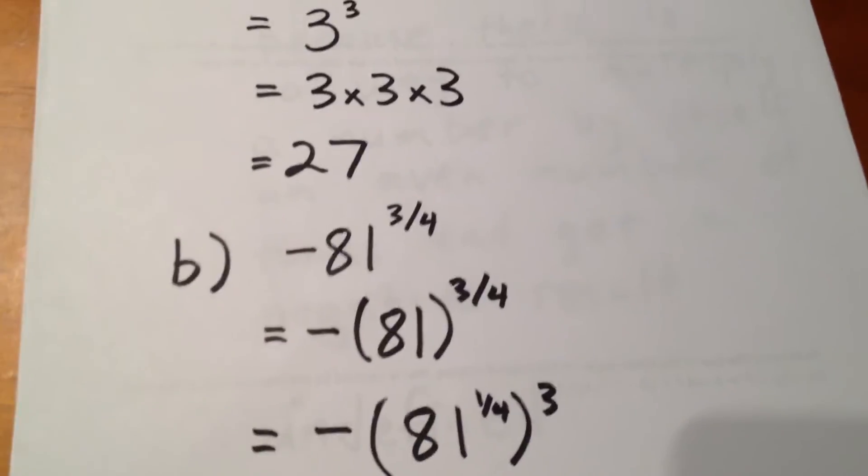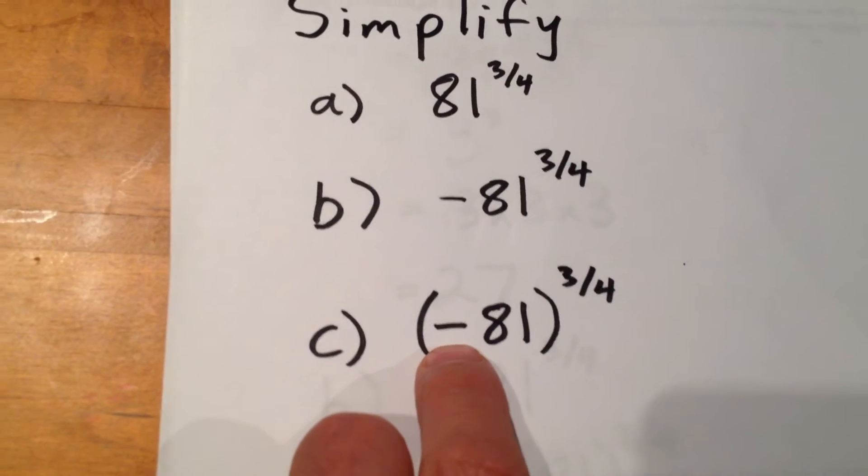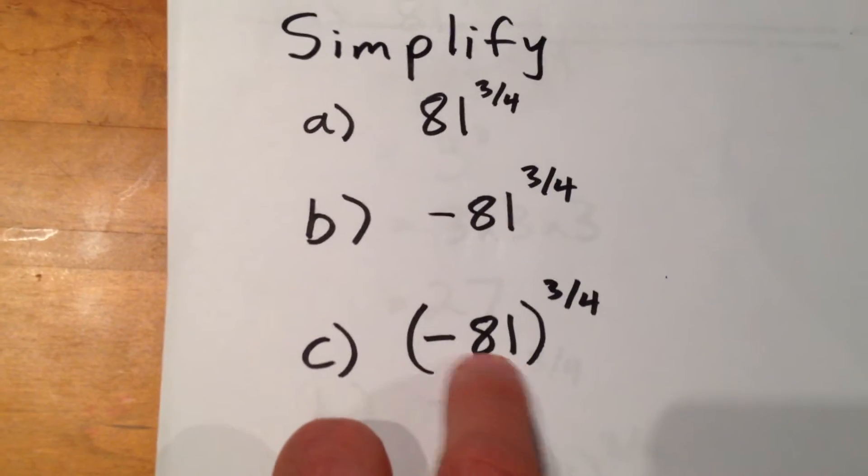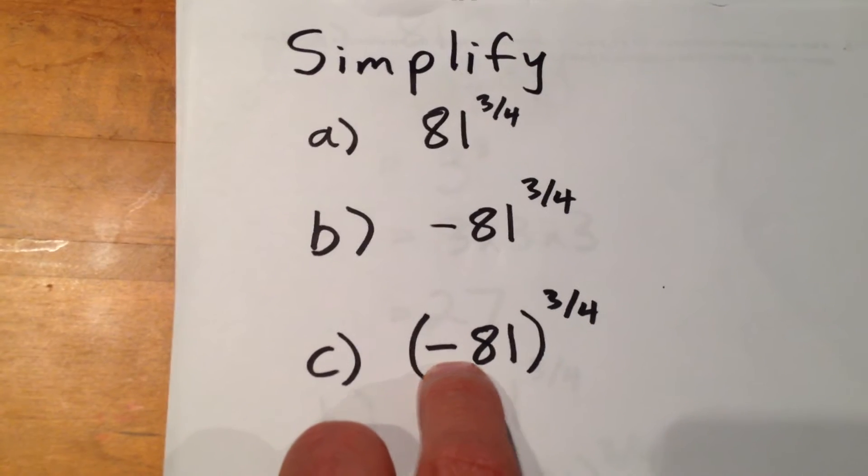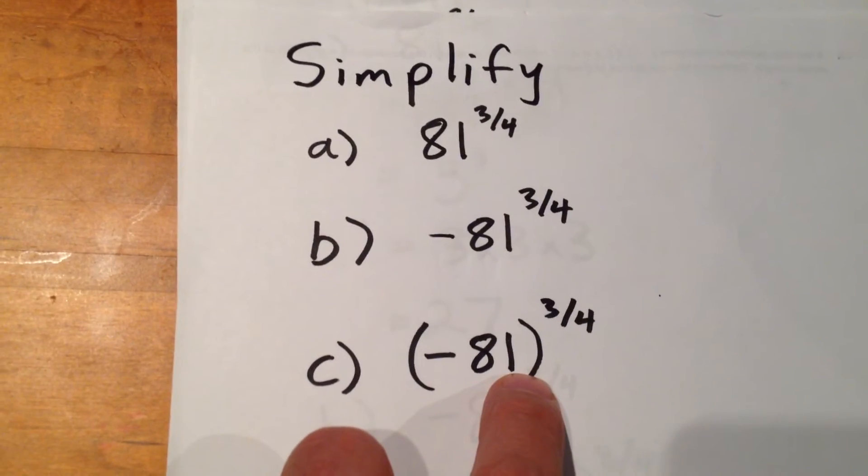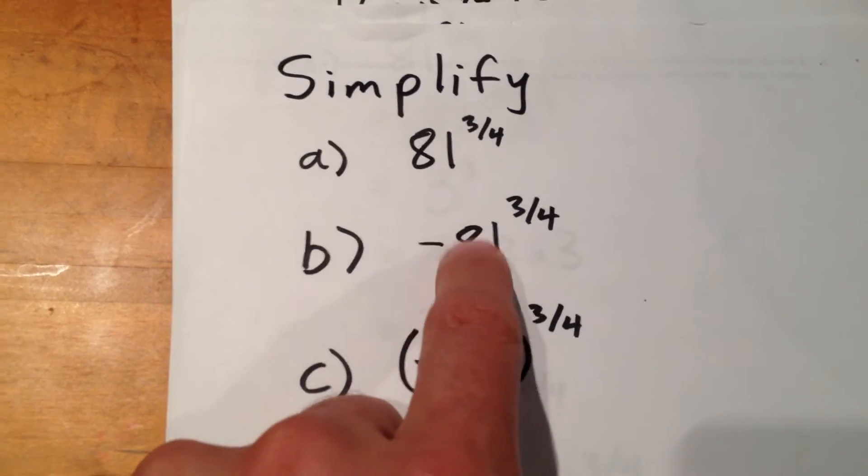Now, our next question asks, what do we do when the negative sign is actually part of the base? In this question, the negative sign is part of the base. The base of the exponent is negative 81, not just 81.